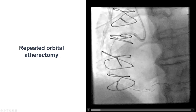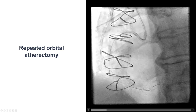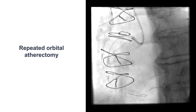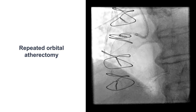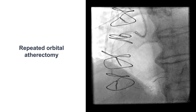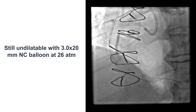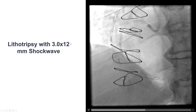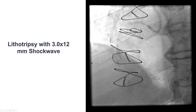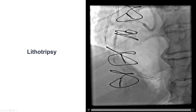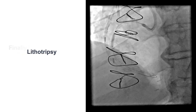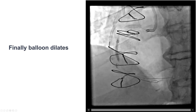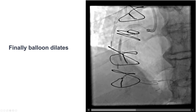What to do for this balloon undilatable lesion? We used the orbital atherectomy crown again and performed repeat modification of the mid-right coronary artery, but still we were unable to expand with a 3.0 mm balloon. We eventually did lithotripsy with a 3.0 by 12 mm Shockwave balloon through the mid-right coronary artery, and then used a non-compliant balloon again — and finally, the balloon expanded.